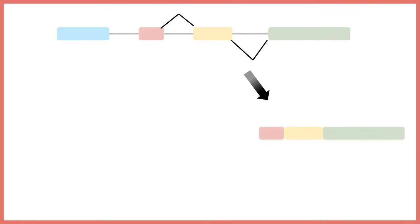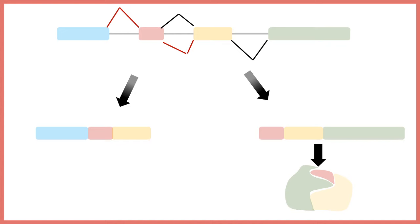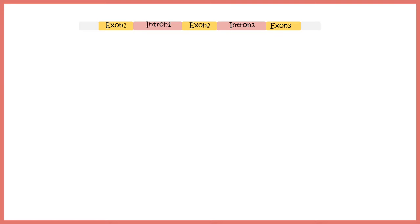Imagine we have four exons depicted in four different colors. These exons can be selected in a tissue-specific, combinatorial manner. For example, the red, yellow, and green exons could be selected to make one transcript and one protein, while the blue, red, and yellow exons are selected in another case to give rise to a different protein. From the same gene, we get two different proteins by selectively picking exons.